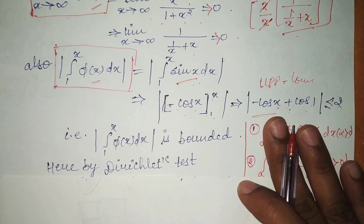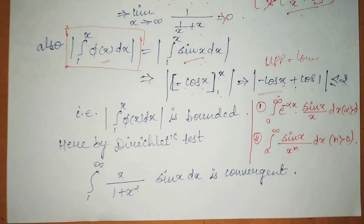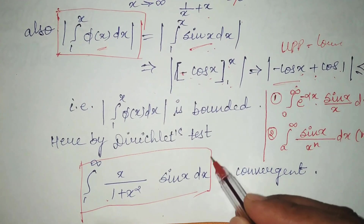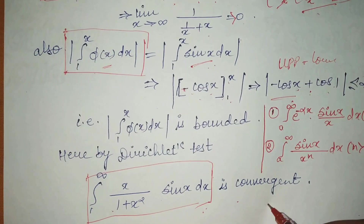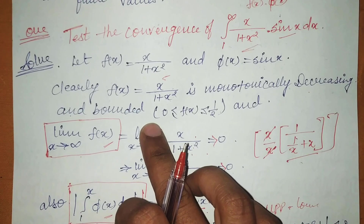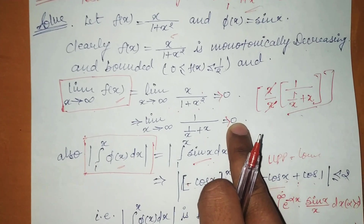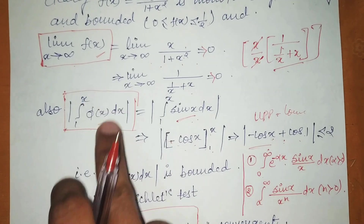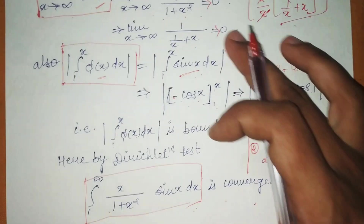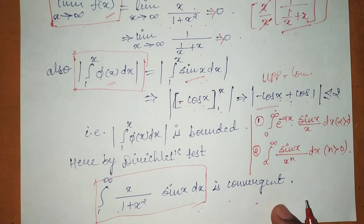So by the Dirichlet test, our function — which was exactly the question given — is convergent. To summarize the steps: first, define fx and φx; second, check fx is monotonic and bounded; third, take the limit of fx as x tends to infinity and confirm it equals 0; fourth, solve the mod integral of φx and confirm it is bounded — not with infinity, but with x. If all conditions are fulfilled, the integral is convergent.